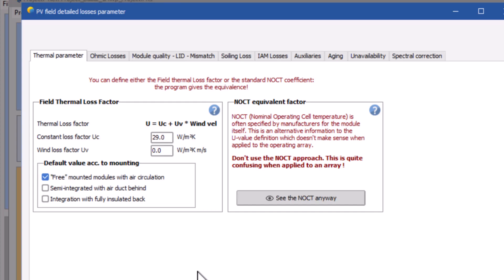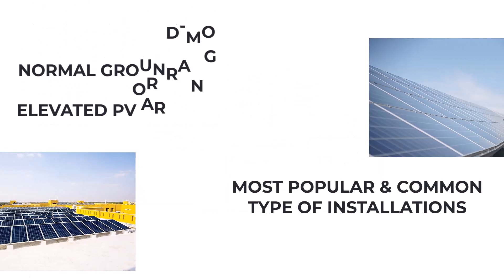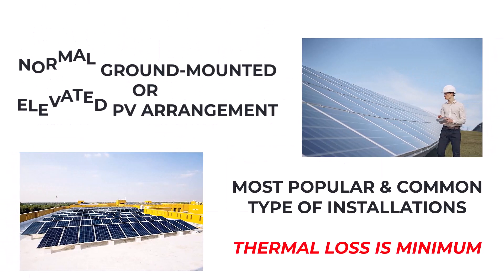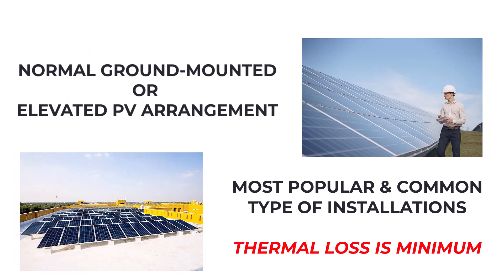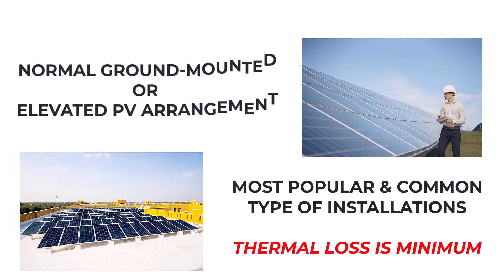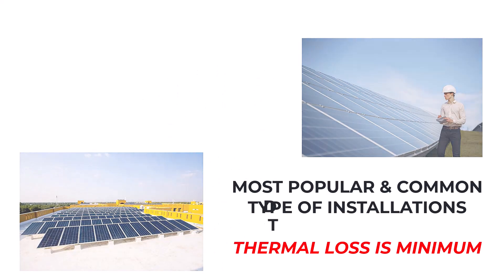To change and suit your project requirement, you have three options to choose from under the subsection of default value according to mounting. The first one is free mounted modules with air circulation, which means the normal ground-mounted or rooftop installation as shown in the pictures. This is the very common type of installation around the world.